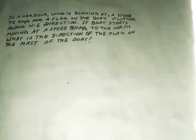In a harbor, wind is blowing at a speed 72 km per hour and a flag on the boat flutters along northeast direction. If boat starts moving at a speed 51 km per hour to the north, what is the direction of flag on the mast of the boat? So in this question...